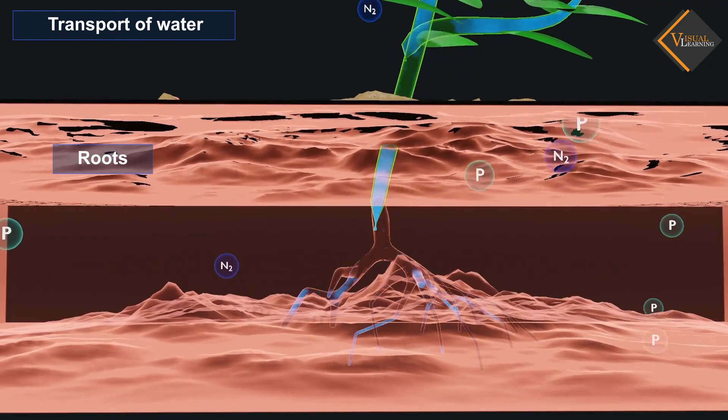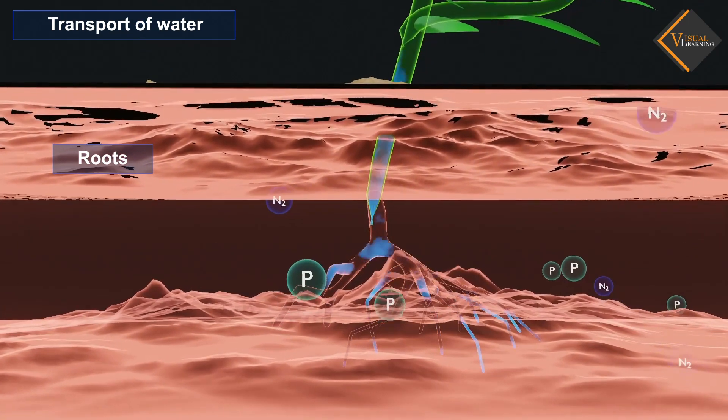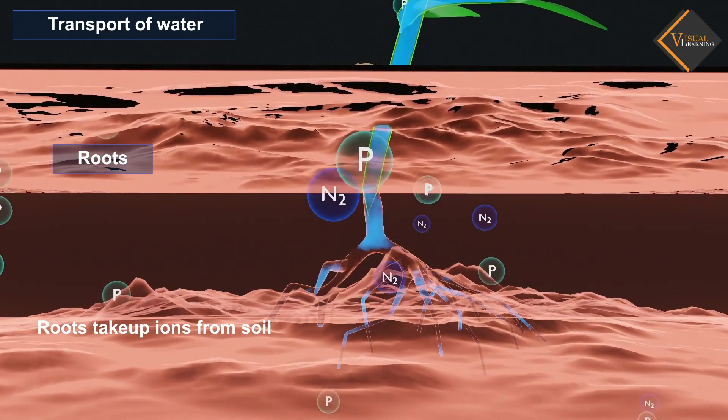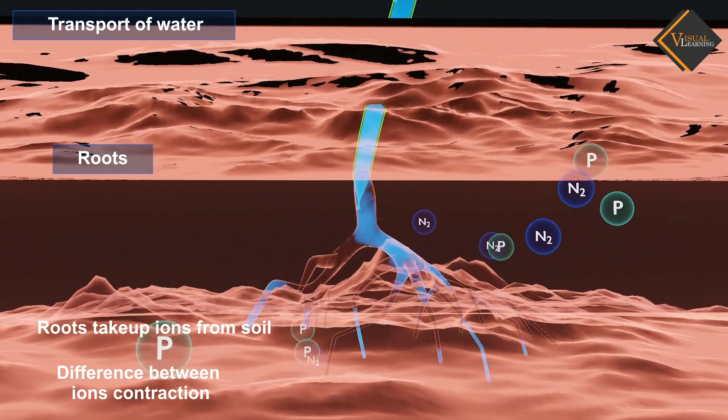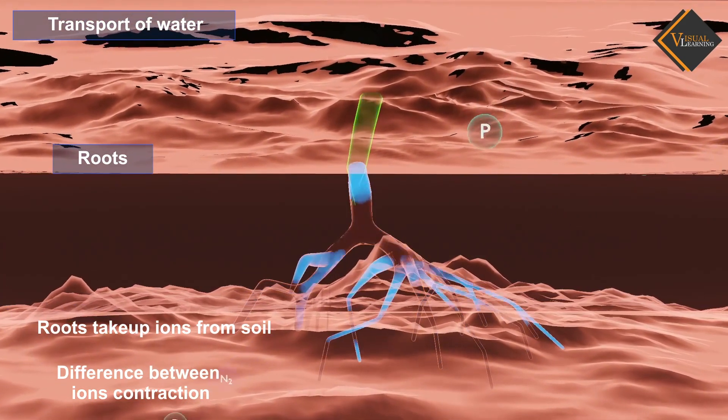At the roots, cells in contact with the soil actively take up ions. This creates a difference in the concentration of these ions between the root and the soil.